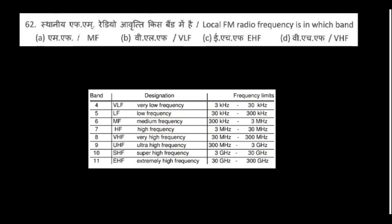Local FM radio frequency — what band is it in? FM broadcasts from 88 MHz to 108 MHz. The VHF (Very High Frequency) range is 30 to 300 MHz, so FM falls in VHF — option B is the answer.